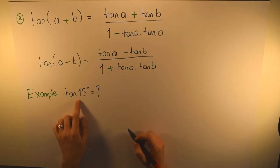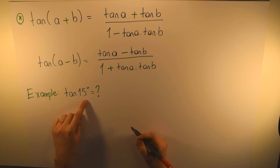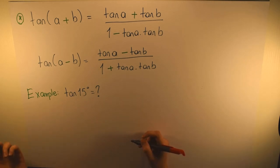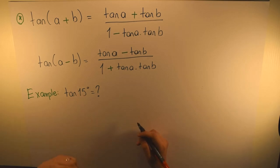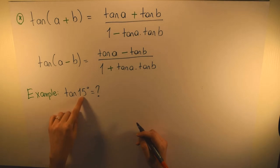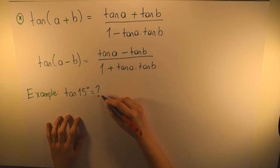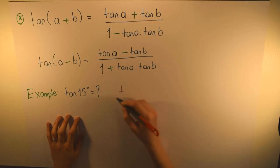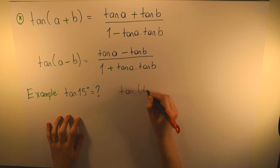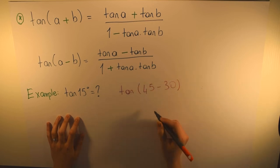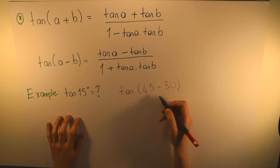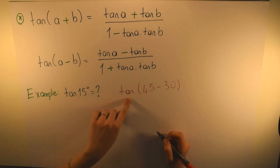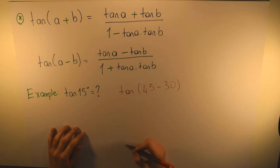Here we want to find tangent 15°. Since we don't know sine 15 or cosine 15 directly, we use the formula. We write tangent 15 as tangent(45−30), because 45 minus 30 equals 15, and we know the values of tangent 45 and tangent 30.